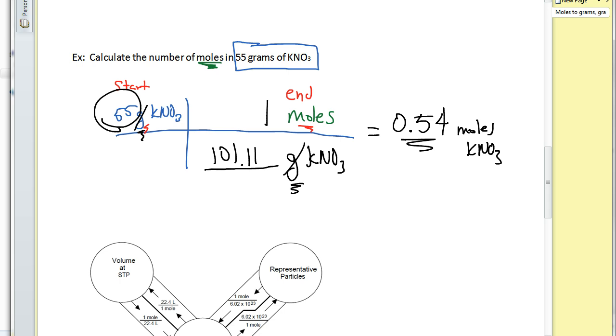Which is about a half a mole. Which sort of makes sense. Because if one mole is 101.1, 55 is roughly a little bit more than half of a mole. And so that answer kind of makes sense. And that's how we do mole problems.